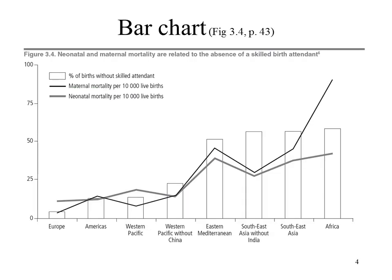This is an example of a bar chart. The bars show the percentage of births without a skilled attendant, with solid white fill. By glancing at this graph, you're able to see what proportion of births without a skilled attendant there were in Europe, in Eastern Mediterranean, and in Africa, to name a few. Also on this graph are two line graphs: maternal mortality per 10,000 live births in the black line, and neonatal mortality per 10,000 live births in the grey line. Have a think about what type of data would be used to graph the percentage of births without a skilled attendant — is it categorical data or numerical data?